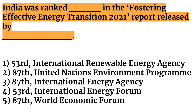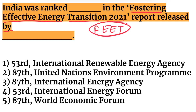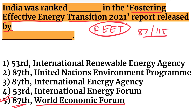India was ranked 87th out of 115 countries in the Fostering Effective Energy Transition 2021 report. This report was released by the World Economic Forum (WEF). Sweden secured the first rank, followed by Norway in second and Denmark in third.